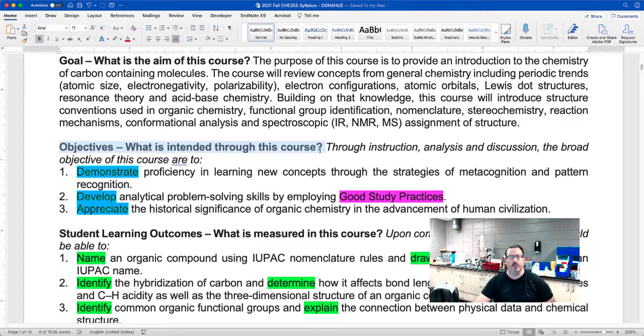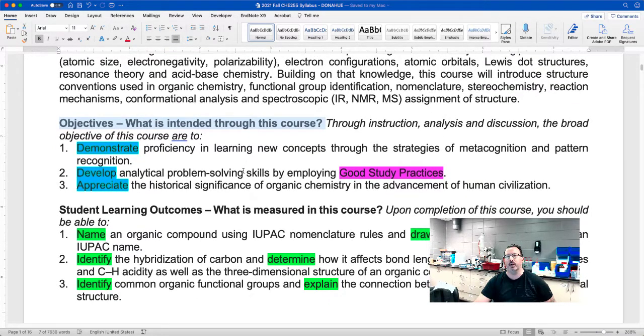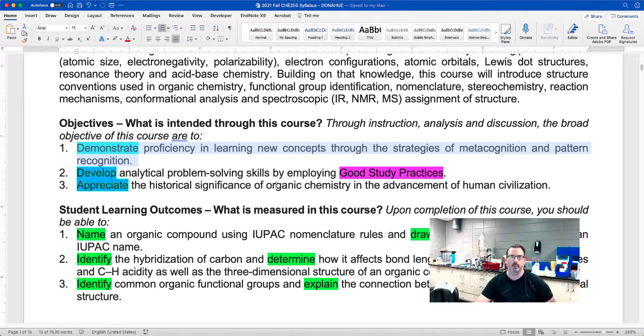So our objective is what is intended through this course. So really in broad terms, not a whole lot of you are chemistry majors. You major in other things. So to be successful in this course, you really need to demonstrate proficiency in learning new concepts through strategies of metacognition and pattern recognition, and I'll explain what those things are as we go through the lectures. Develop analytical problem-solving skills by employing good study practices, and then finally appreciate the historical significance of organic chemistry and advancement of human civilization.